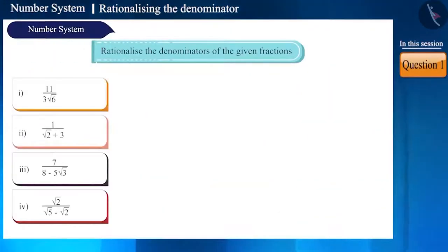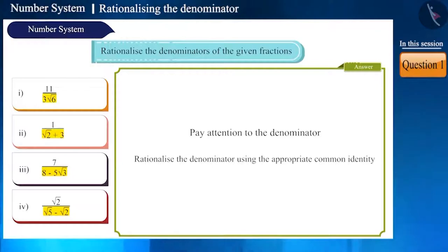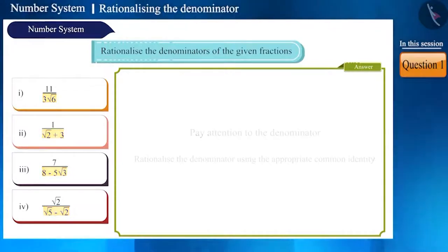Rationalize the denominators of the given fractions. Friends, all we have to do is find out which digit should be used to multiply the denominator so that the denominator turns from irrational to rational number. This is not a difficult task. We can do it easily by using the numbers and identities given in the denominator.